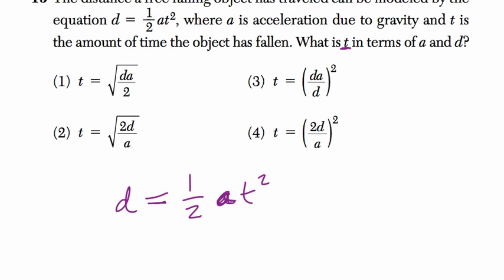So how do we get t all by itself? I'm going to multiply both sides by 2. That's my first step. That will get rid of the half.